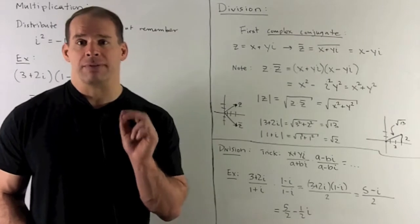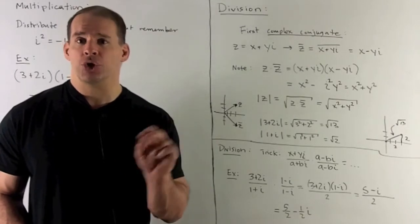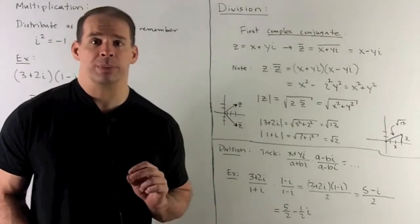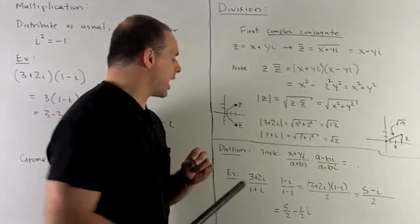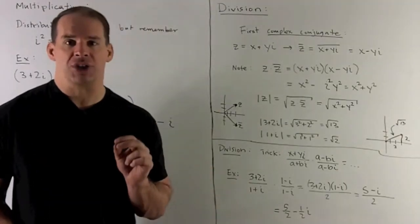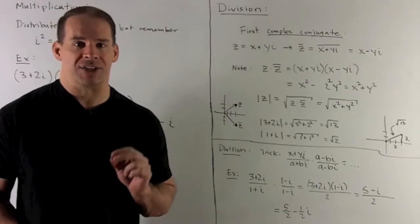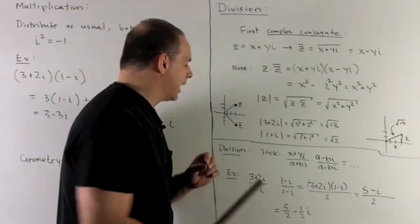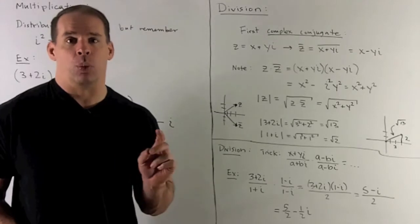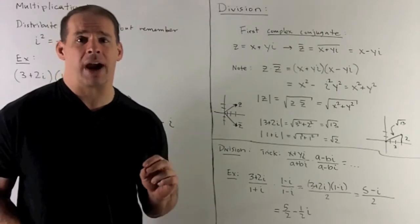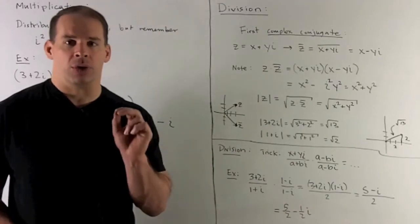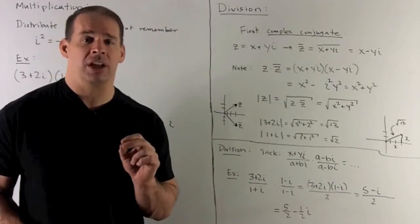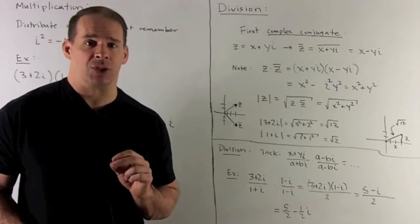So no point memorizing a formula. You'll just use your trick and then follow your nose. So let's try 3 plus 2i over 1 plus i. Complex conjugate of the denominator is 1 minus i. We multiply in the denominator. It's going to give me 1 squared plus 1 squared, which gives me a 2. And then in the numerator, we do our usual complex multiplication, noting that i squared equals minus 1.